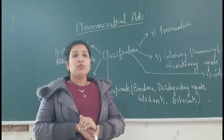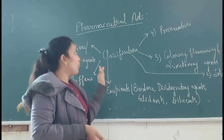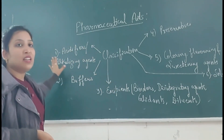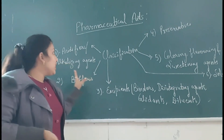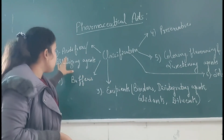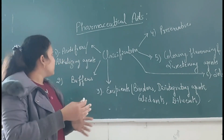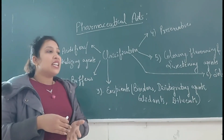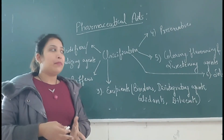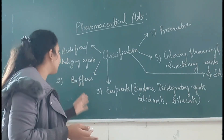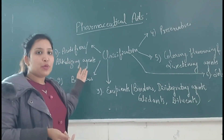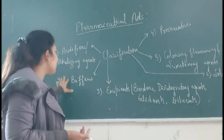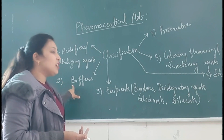Now, the classification of pharmaceutical aids. First is acidifiers. Acidifiers initiate the product in chemical reactions. Examples of acidifiers include H2SO4 and HCl.